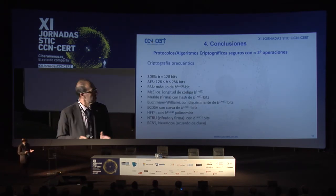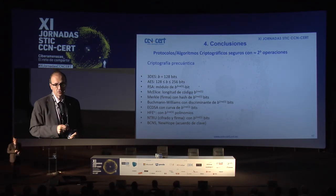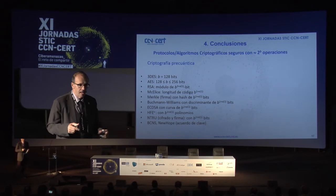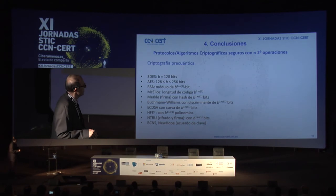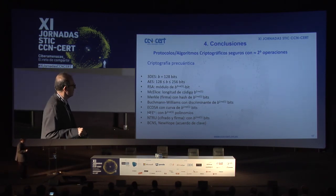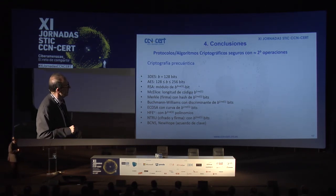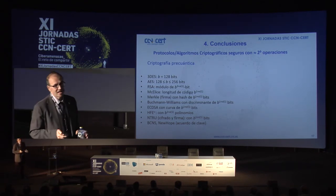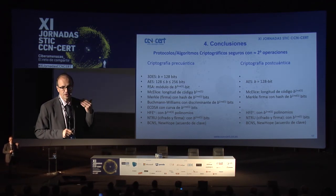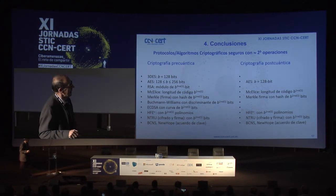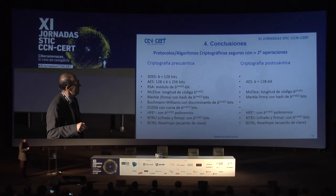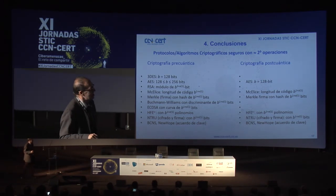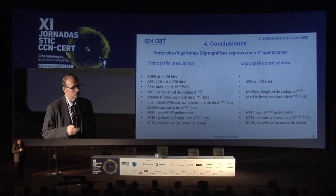En conclusión, en la criptografía precuántica actual tenemos sistemas como triple DES, AES, RSA, McEliece, Merkle, firma de curva elíptica ECDSA, el HFE relacionado con la criptografía multivariante cuadrática, NTRU y los acuerdos de clave basados en retículos. Aunque todo esto existe, solo utilizamos fundamentalmente los tres primeros y casi exclusivamente el segundo y el tercero. El día que tengamos un ordenador cuántico, desaparecerán muchos de los sistemas actuales y tendremos que recurrir a los protocolos poscuánticos descritos.